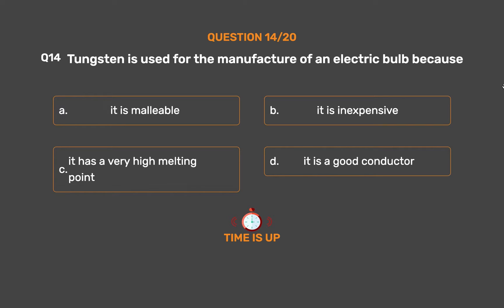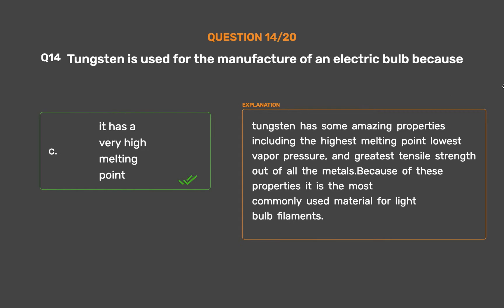The correct answer is Option C: It has a very high melting point. Tungsten has amazing properties including the highest melting point, lowest vapor pressure, and greatest tensile strength of all metals. Because of these properties, it is the most commonly used material for light bulb filaments.